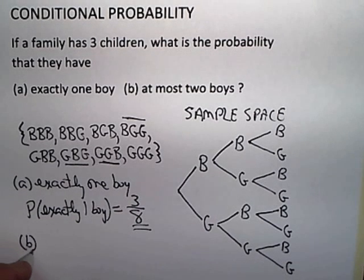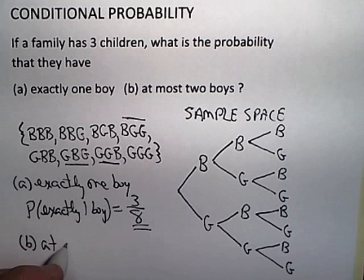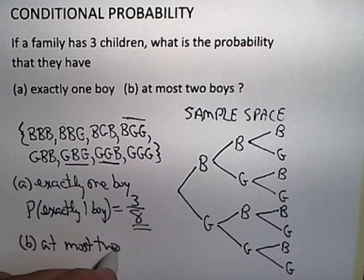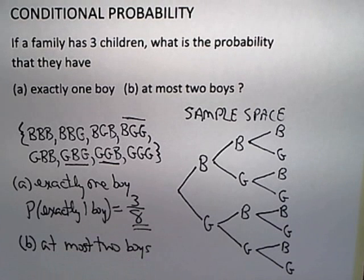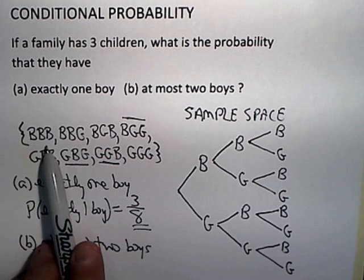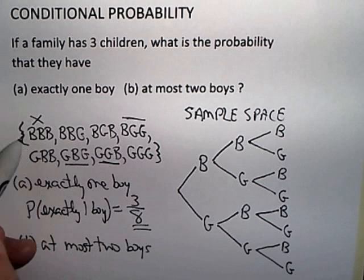The B part, at most two boys, is just as simple as long as you can interpret the phrase 'at most two boys.' Well, at most two boys means you can't have more than two boys. There's only one case where you have more than two boys, so you're really just leaving out this one.